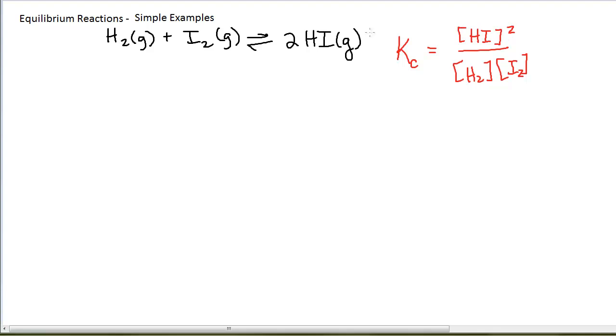You'll notice that I squared the HI concentration, which is on top, because that is the product and the coefficient is 2. The concentrations of H2 and I2 are both multiplied in the denominator. So this is my expression for my equilibrium constant in terms of concentration, and that's why I have the little c subscript.